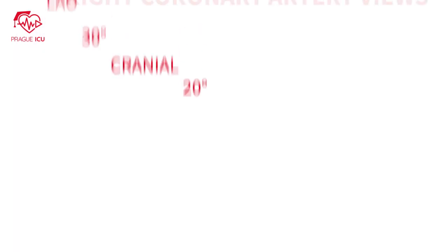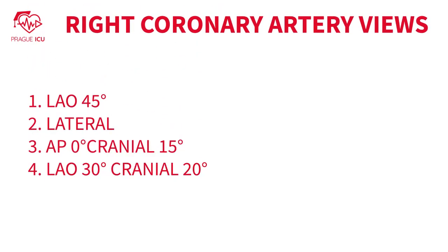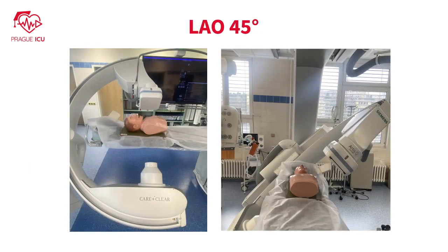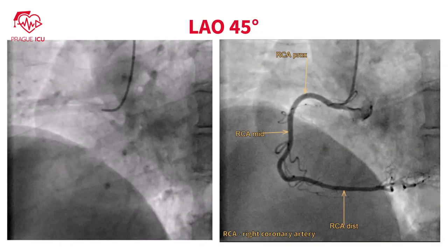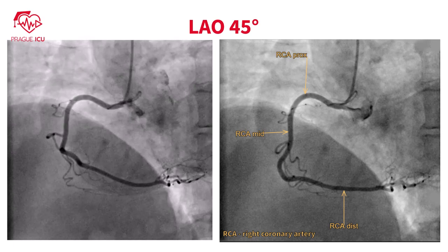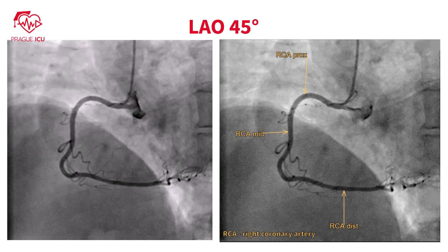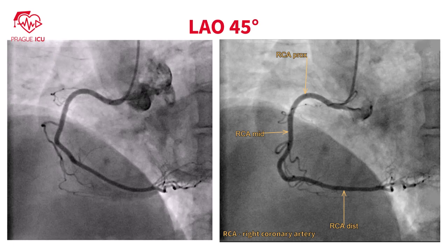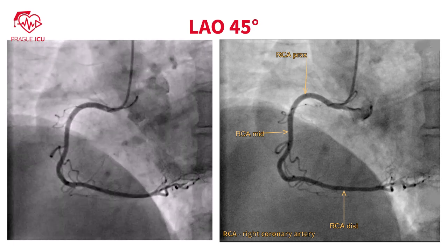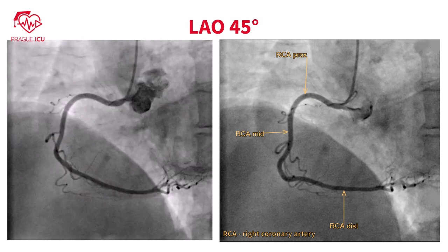The right coronary artery is typically imaged in 2 up to 4 angiography views. Prague ICU recommends the following ones. Left anterior oblique 45 degrees view usually shows the full length of the right coronary artery in a C shape. You can see the ostium of the right coronary artery and its proximal, mid, and distal parts.